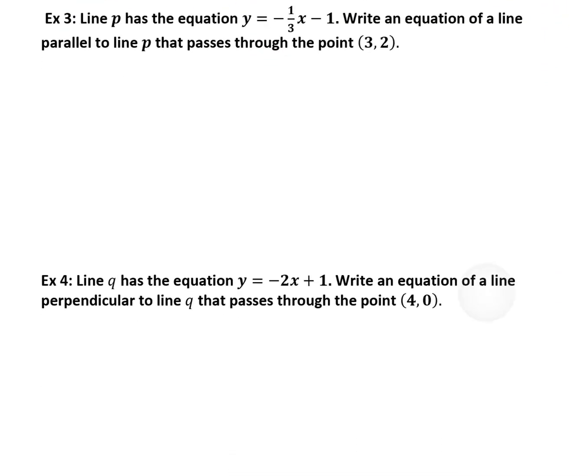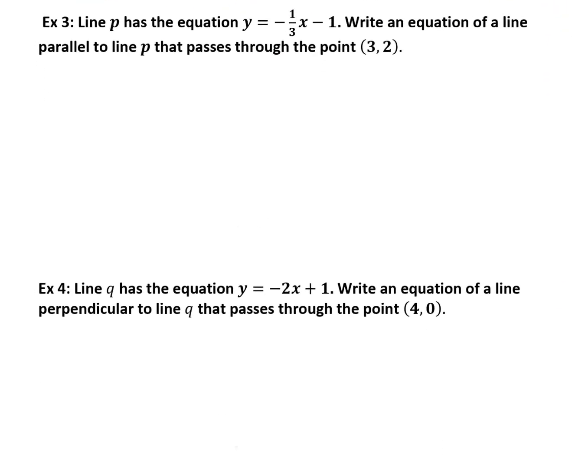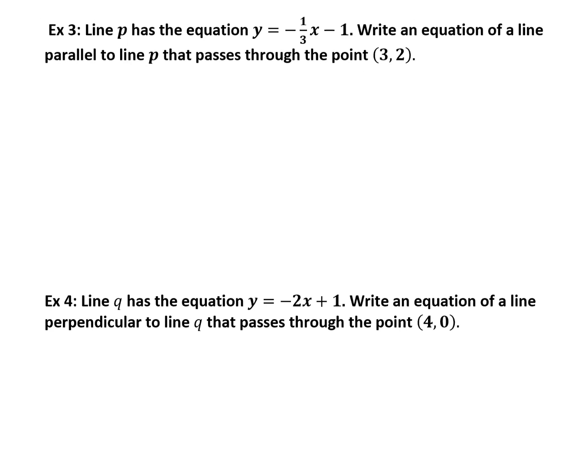In the last two examples, we're going to write equations of lines. So you have to remember from algebra 1 how to write linear equations. So just to recap, if you want to write a linear equation in slope-intercept form, you would write it as y equals mx plus b. And the m represents the slope, the b represents the y-intercept.